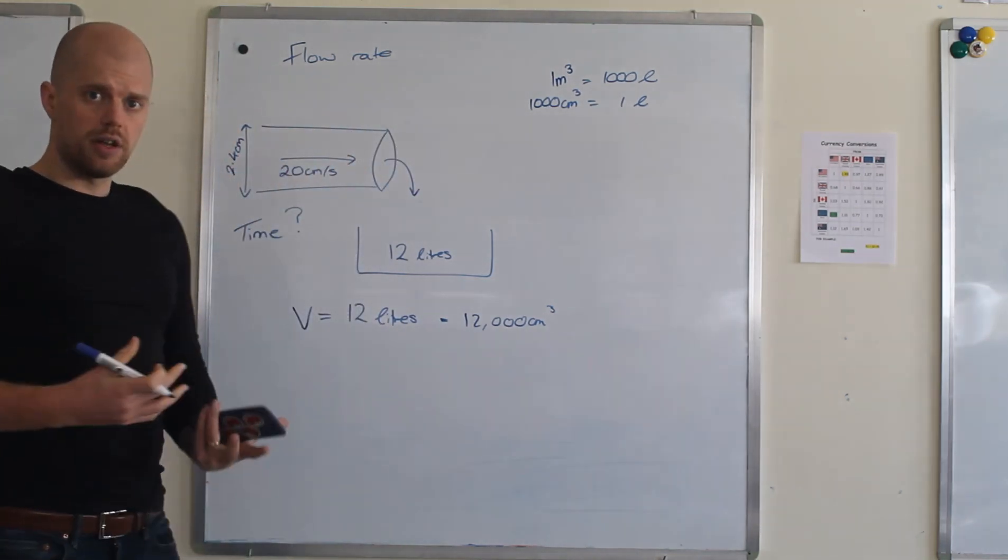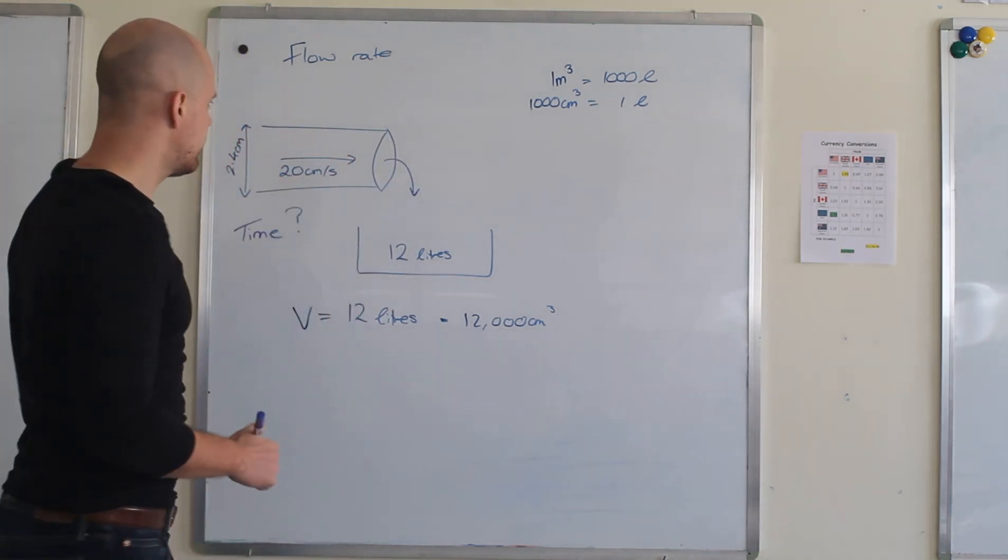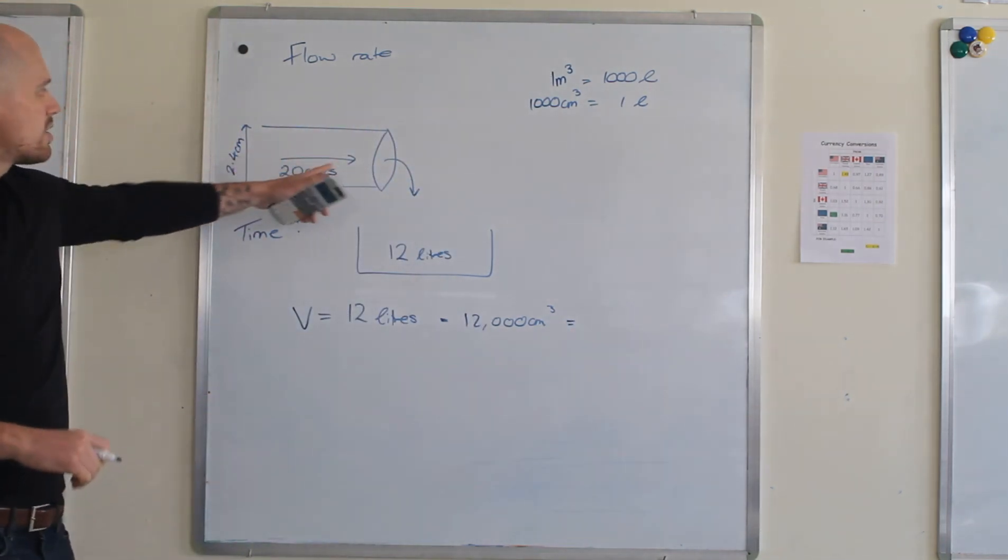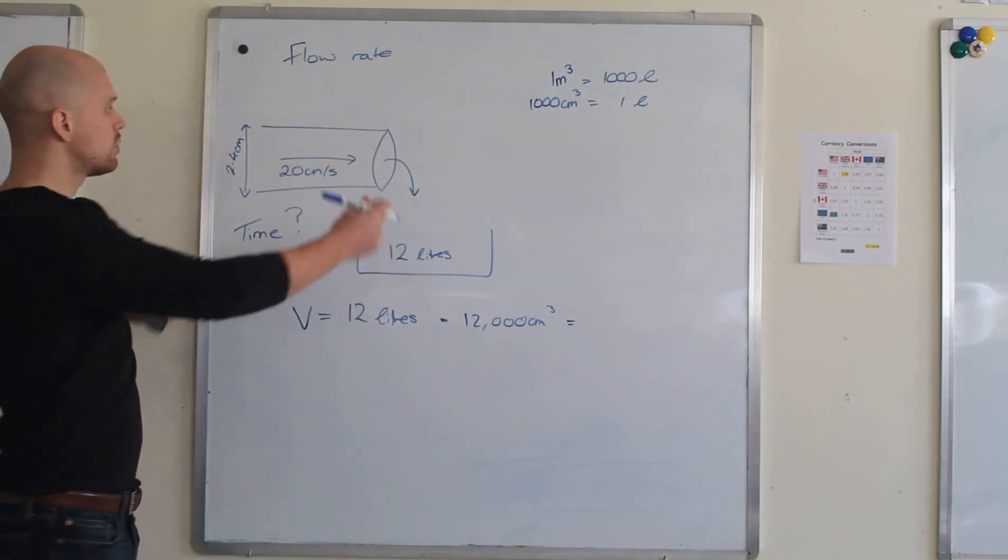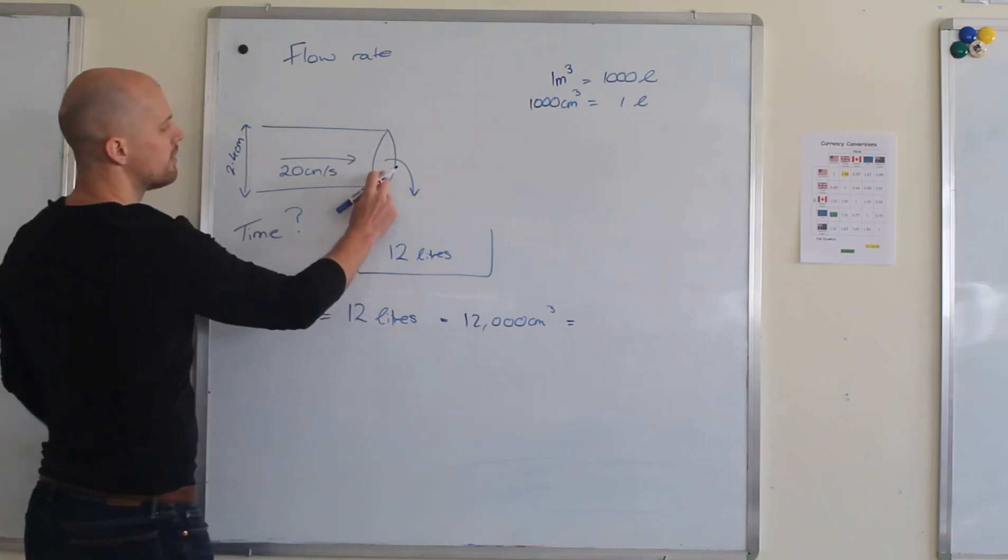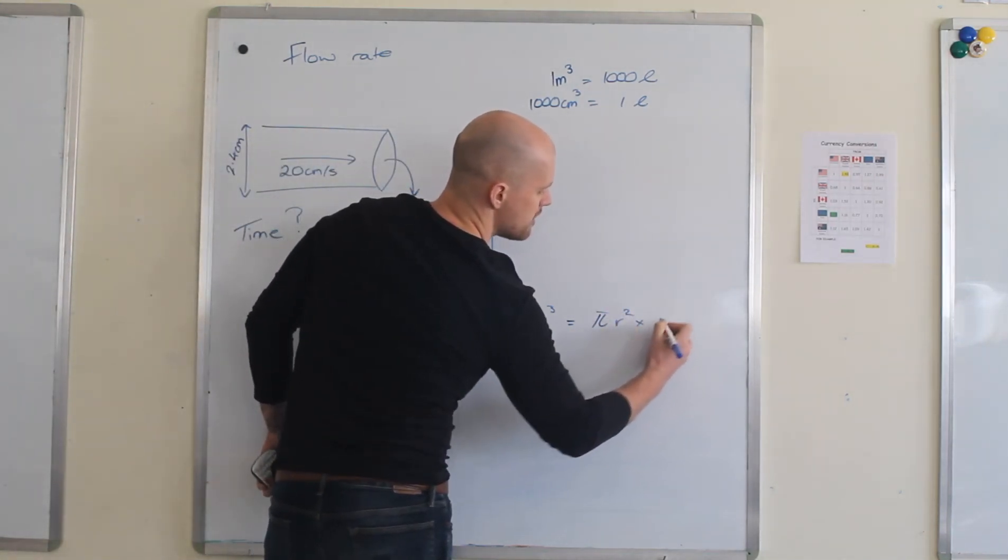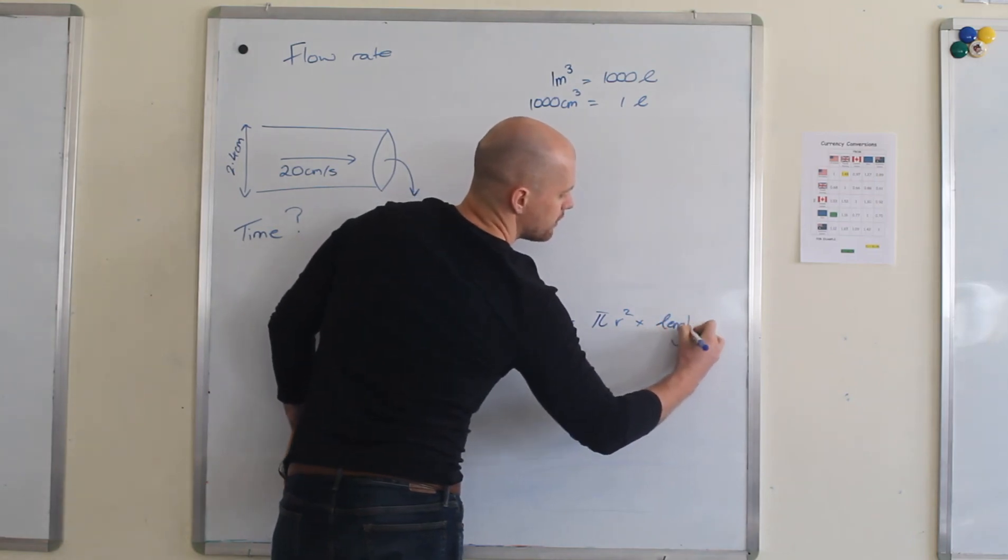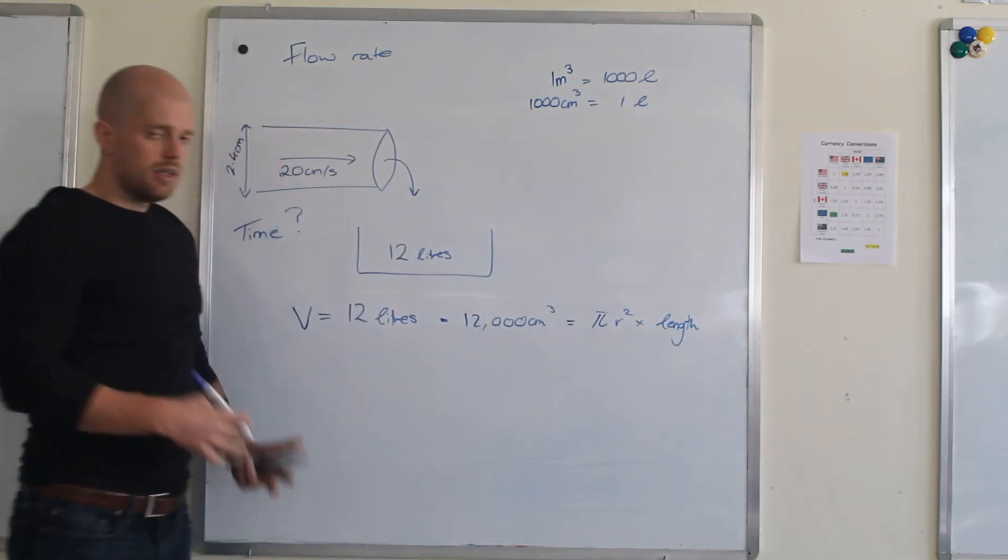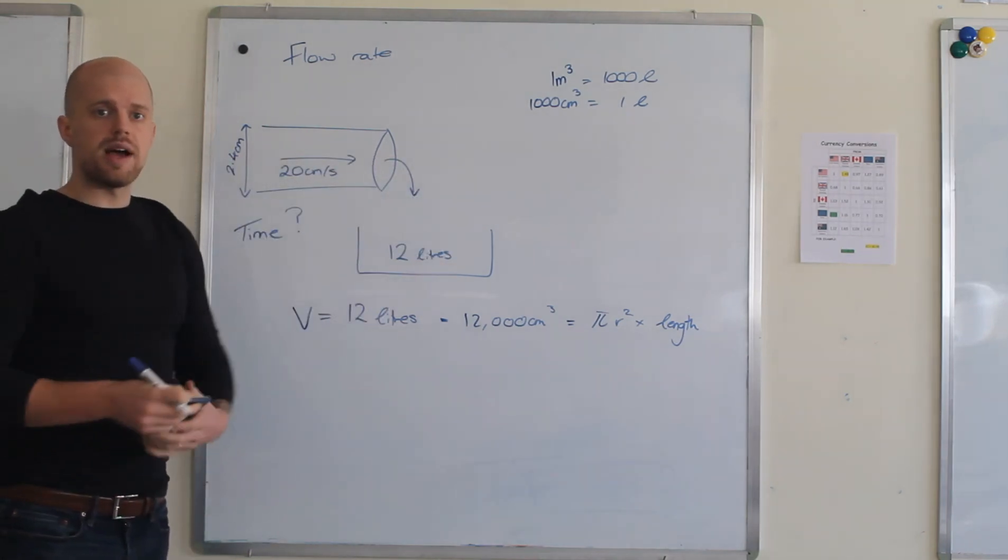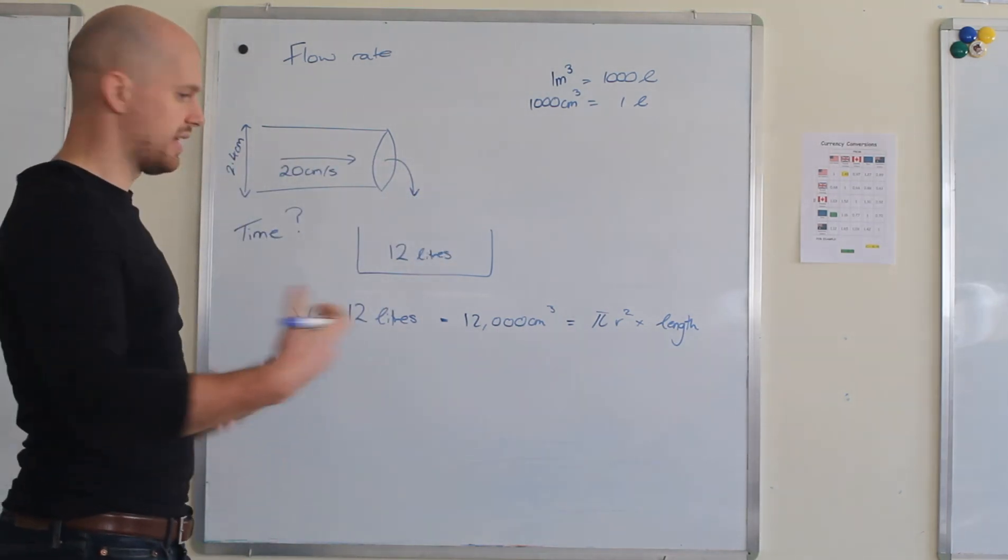And we know that volume is cross-sectional area times by length. Now we're looking at a circular tube, so we're doing a cross-sectional area, so that's the area of the circle, pi r squared, and we'll times it by the length. And we don't know the length, but we know the speed at which it's going, so that will allow us to find the length eventually.